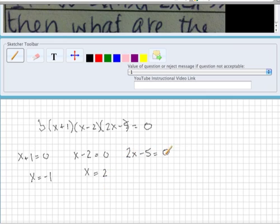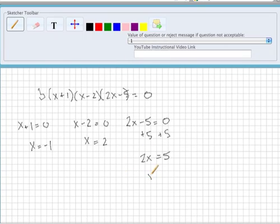And if 2x minus 5 equals 0, then I'm going to add 5 to both sides to get that 2x is equal to 5, and then we're going to divide both sides by 2 to get x is equal to 5 halves.